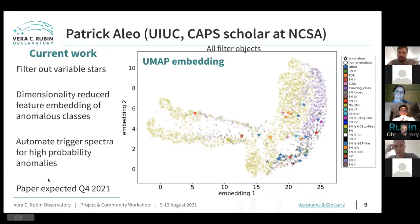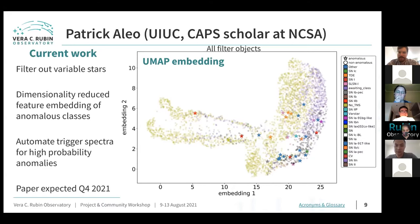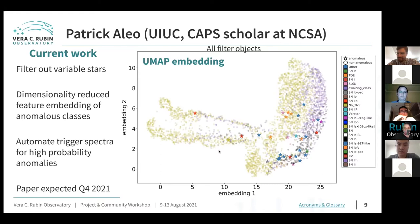I'm working on a dimensionality-reduced feature representation of all events tagged by the filter. Some still have contaminants like variable stars and QSOs, but I'm trying to find a representation where different transient classes — including the most anomalous ones like superluminous and peculiar Type Ia supernovae — separate into different clusters. When a new event comes in tagged by the filter, we can assign a probability and see if it's worth follow-up. Working on the paper now and hopefully I'll have something to show soon.